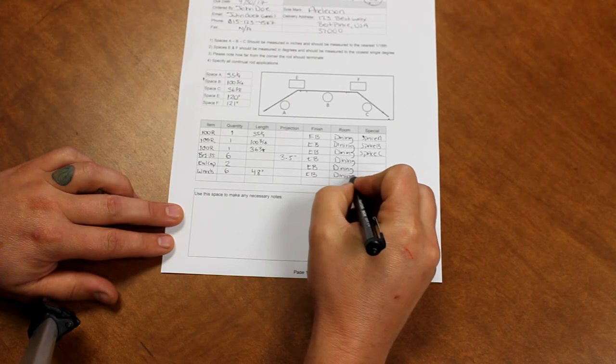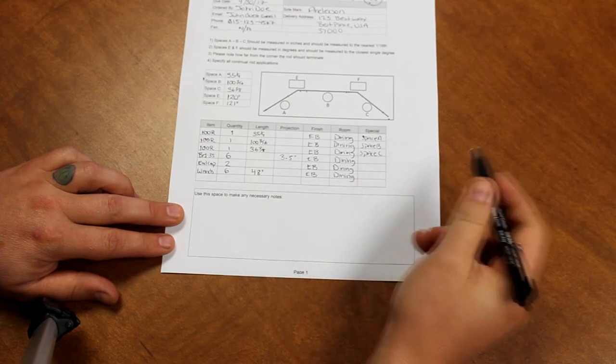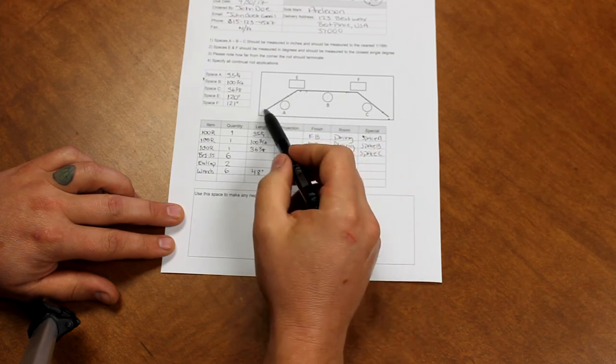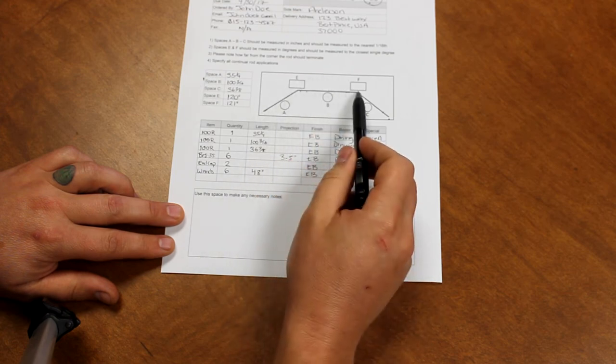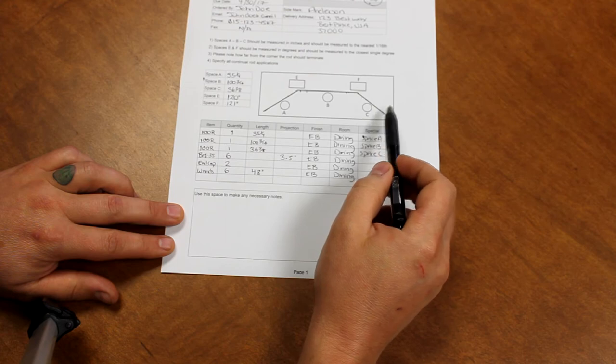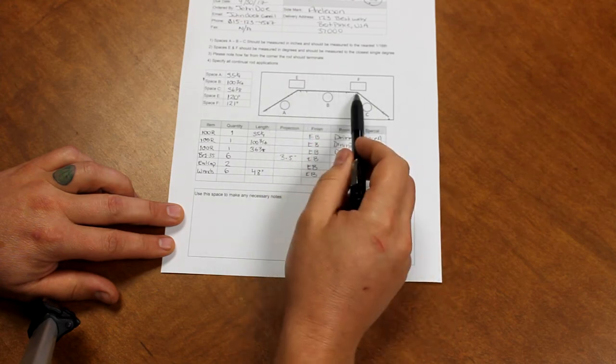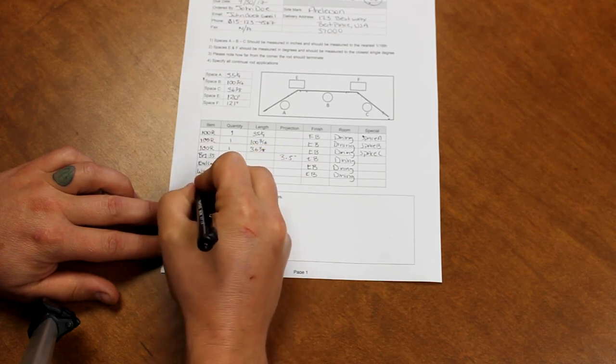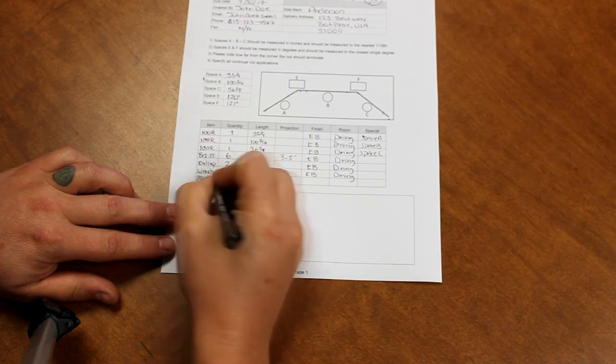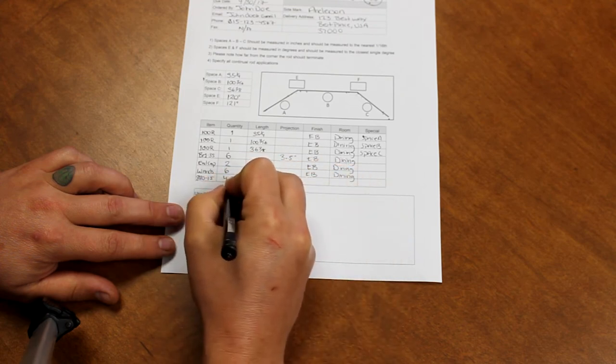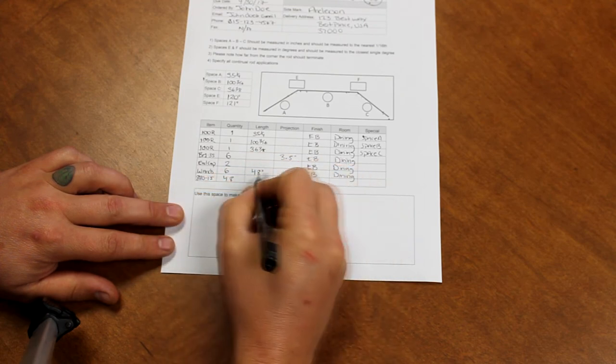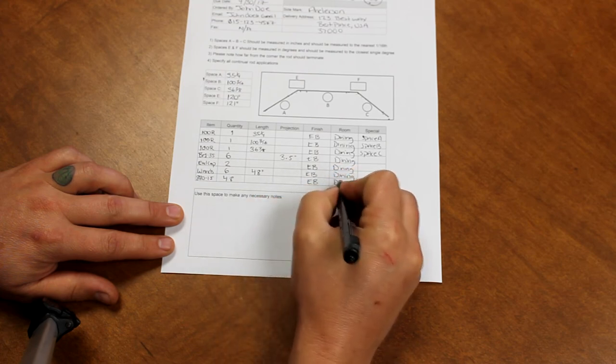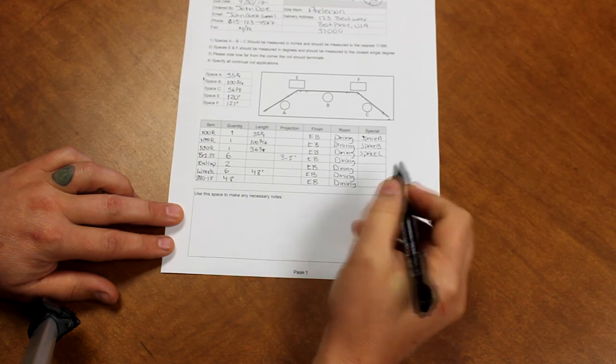Lastly we will be doing our rings. I want 12, 24, 36, and 48 rings in each of those areas indicated. Item number is 880-15. Quantity is 48. Length unnecessary. Projection unnecessary. Finish is English brown in the dining room. And again there are no special instructions for there.